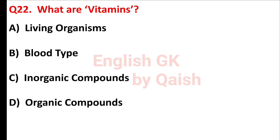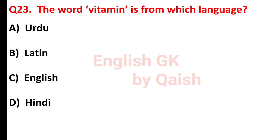What are vitamins? Answer is option D, organic compounds. The word vitamin is from which language? Answer is option B, Latin.